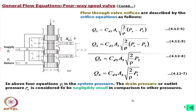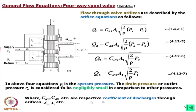Here it should be noted that Cd1, Cd2, Cd3, Cd4 are four different discharge coefficients through areas A1, A2, A3, A4. However, it can be shown that for valve orifices all four discharge coefficients are more or less equal, and in general a single value Cd is used for all of them.